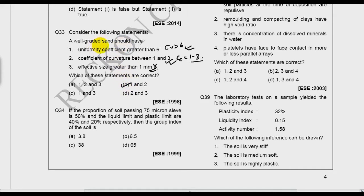Now I want to discuss more on this. If he has asked for gravel, then there is only one change: Cu becomes greater than 4. For gravel, Cc is 1 to 3 and both should be applied. This is important.